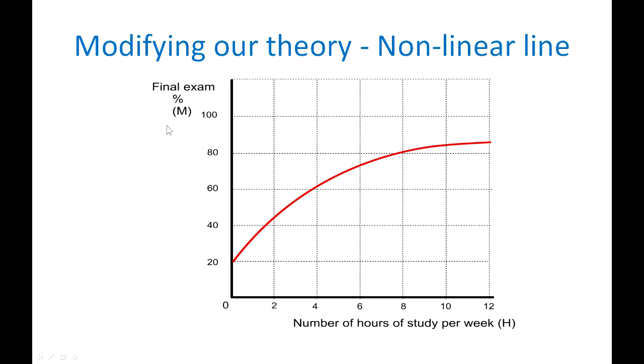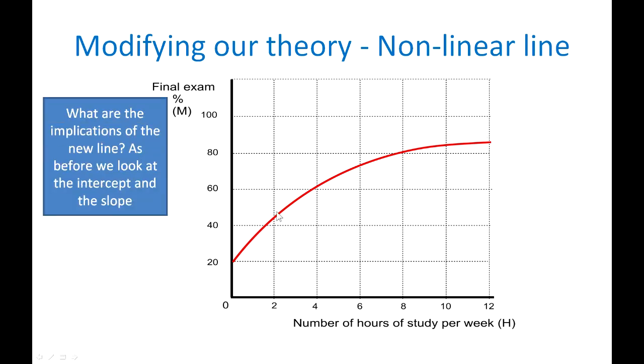In this slide we're going to modify our theory by assuming, remember it's just an assumption we have no evidence at this stage, assuming the relationship is a nonlinear one which is represented now by this curvilinear line. Let's look at the implications of this new line. Just as before we look at the intercept and the slope. Well the intercept, there's no change because all we're doing is seeing how each extra hour of study contributes to the exam mark but intelligence and all those other factors stay exactly the same.